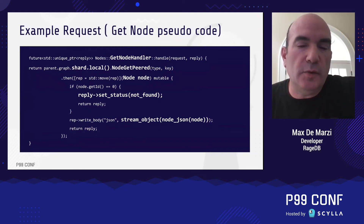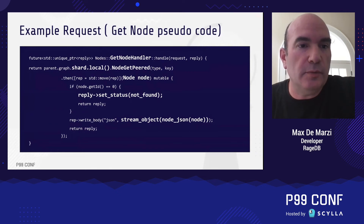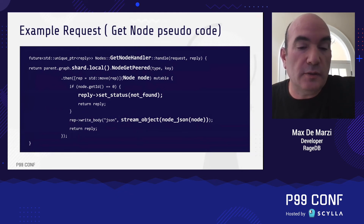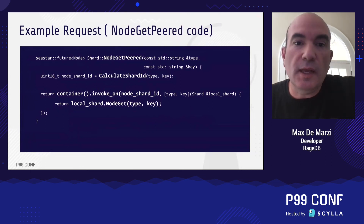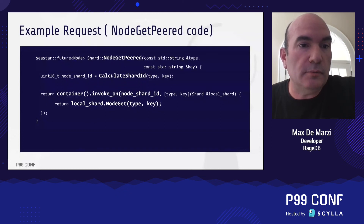Let's look at the node get peered method in detail. It calculates the shard ID based on type and key, then sends a message to that shard saying: get me the node for this type and key. All of these are turned into futures, so nothing is waiting — you're just passing futures around.